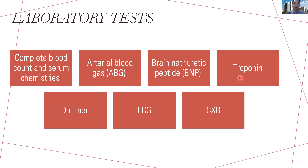Moving on to usual laboratory tests: patients should have a full blood count and at least a renal panel to evaluate whether they can receive contrast CT. If available, do an arterial blood gas, especially when patients are hypoxic. You can do a BNP for risk scoring. Of course, do a D-dimer when you want to rule out PE, plus a baseline ECG and chest X-ray.